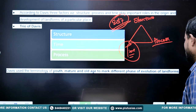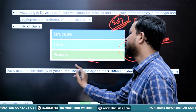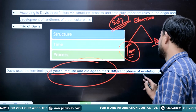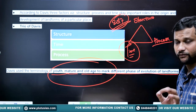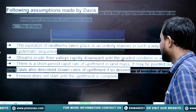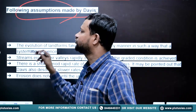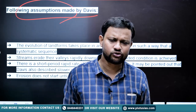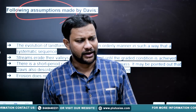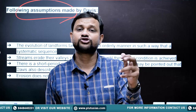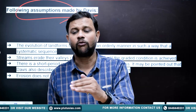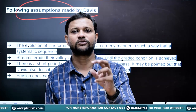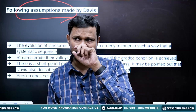Davis used youth, mature, and old stages to mark different phases of the evolution of landforms. As with any proposition that tries to generalize, you have to avoid real-time complexities, which gives rise to assumptions. Davis had a few critical assumptions, and these are equally the points of criticism of his model.